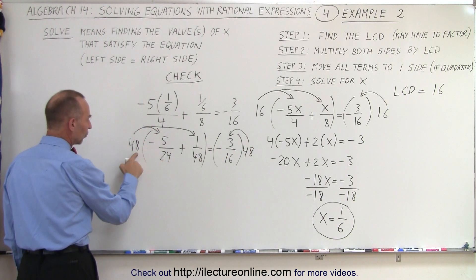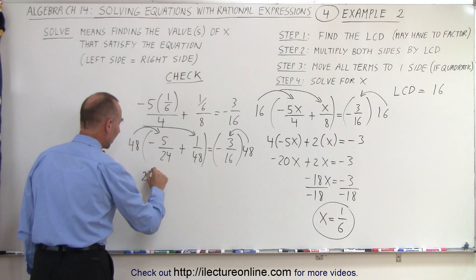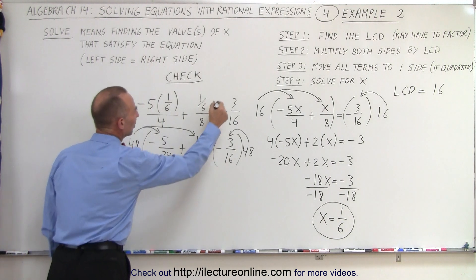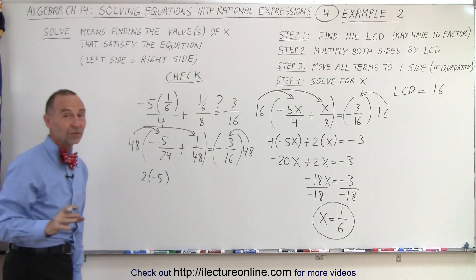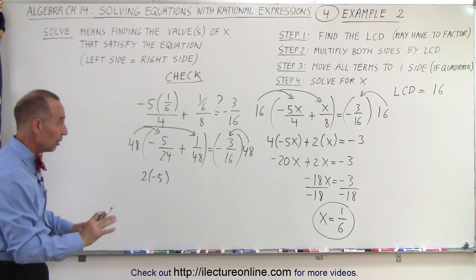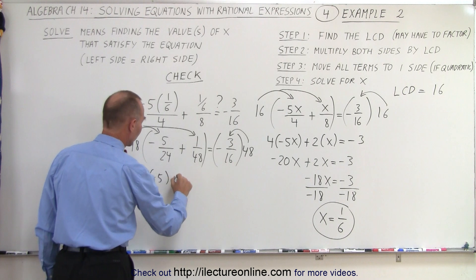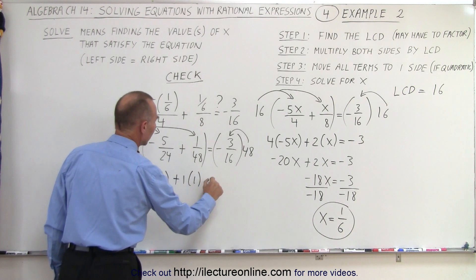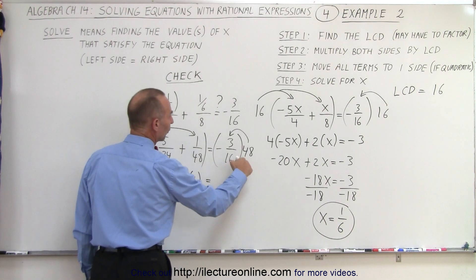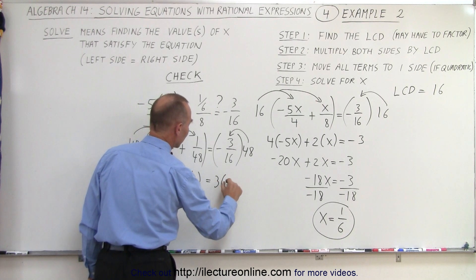So 48, 24 goes into 48 twice, so we end up at 2 times negative 5. Of course, let me put a question mark on there because that's what we're doing. We're checking. We're not sure at this point. And here, 48 goes into 48, 1, so that's plus 1 times 1 equals 16 goes into 48, 3 times, so it's 3 times the negative 3.